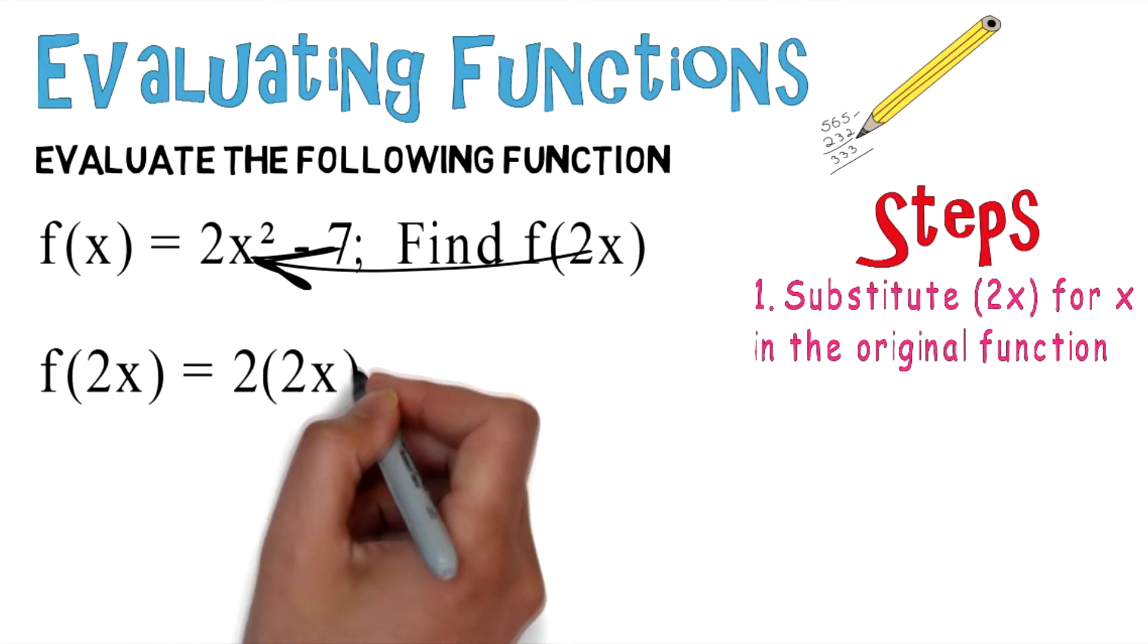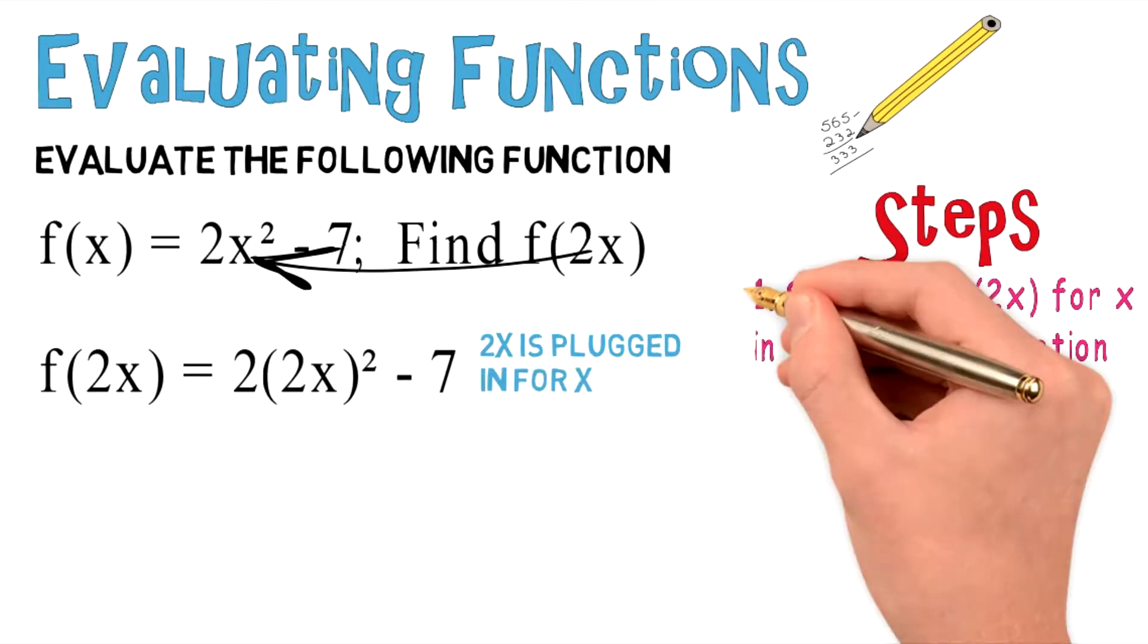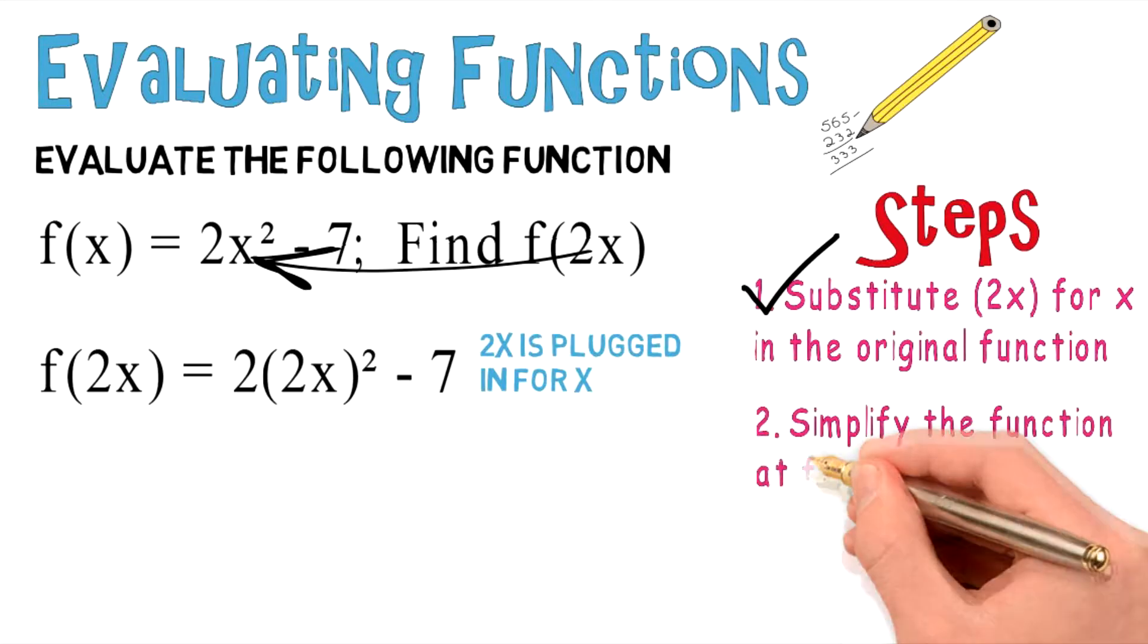f of 2x equals 2 times 2x squared minus 7. Notice the 2x is plugged in for x, so you can check off the first step, which brings us to the second step, which is to simplify the function at f of 2x.